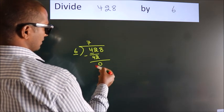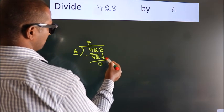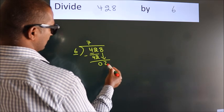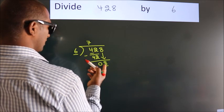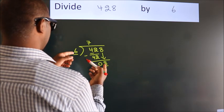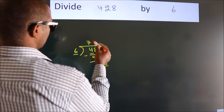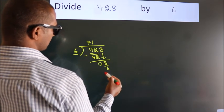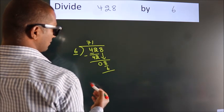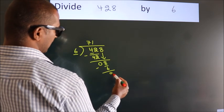After this, bring down the beside number. So 8 down. A number close to 8 in the 6 table is 6 1s, 6. Now we subtract. We get 2.